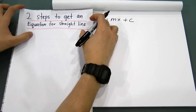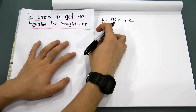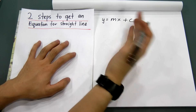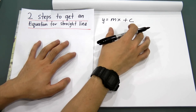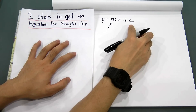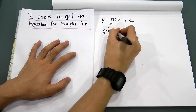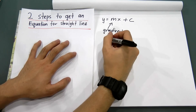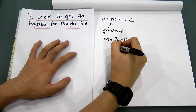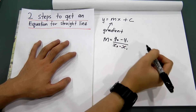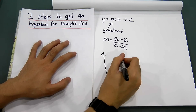Before I teach you this, you have to understand what the equation of a straight line is. Y and x are coordinates, as you can see in the diagram. The very important thing here is m. M stands for gradient. For gradient, there is one formula: y2 minus y1 divided by x2 minus x1.